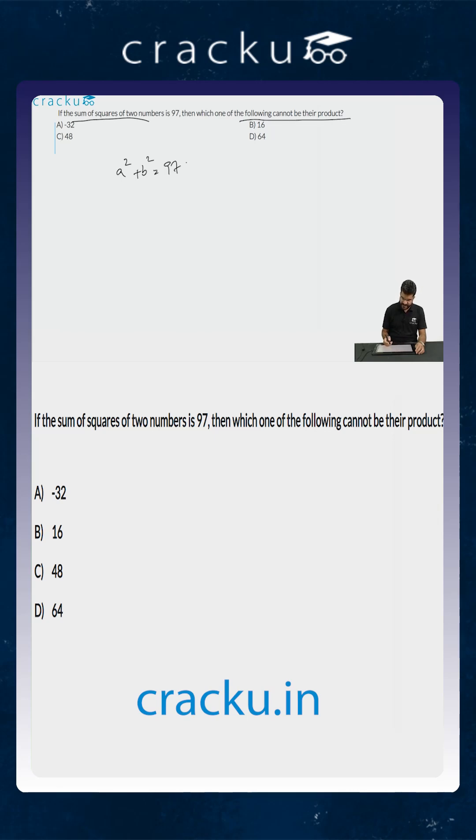Then which of the following cannot be their product? So we are looking for possible values of ab. One of the first things that you should remember is that if both a and b are positive then we can use arithmetic mean greater than geometric mean.